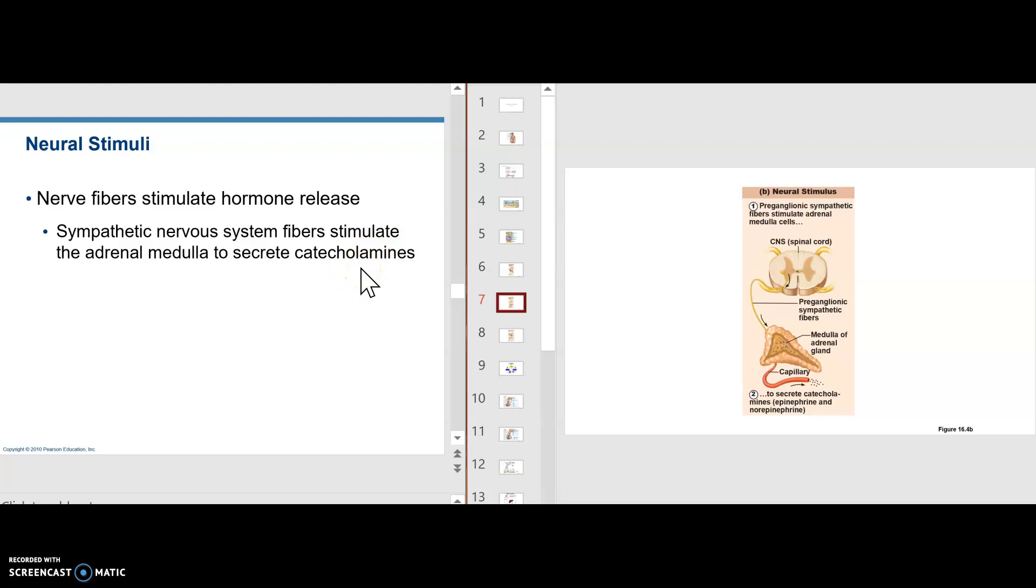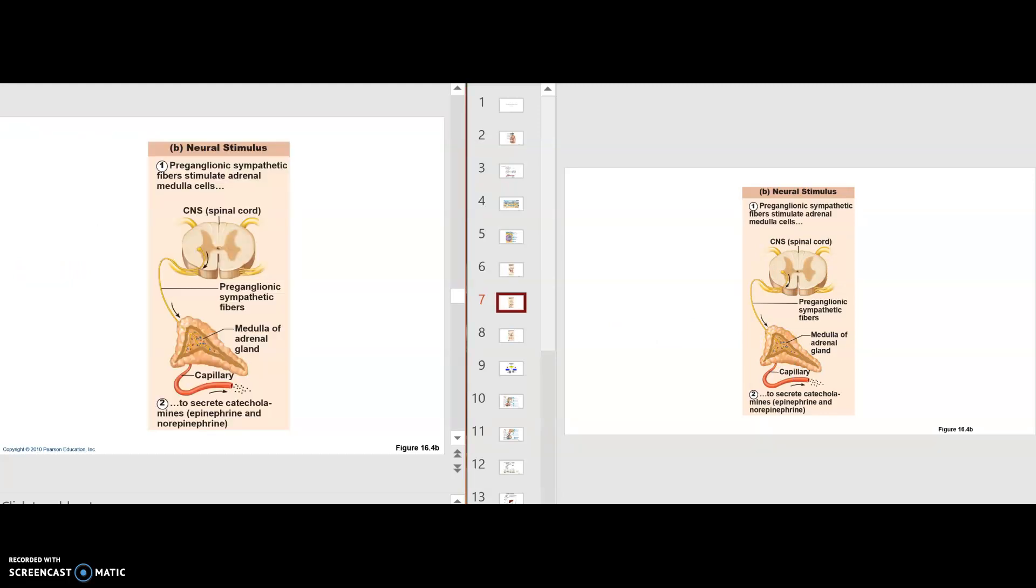Norepinephrine, the NR means it does not have the methyl group added. When the methyl group, CH3, is enzymatically added to norepinephrine, it becomes epinephrine. But you know the other name for epinephrine because it comes from the adrenal gland. It's called adrenaline. So that's neural stimuli.